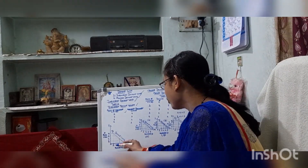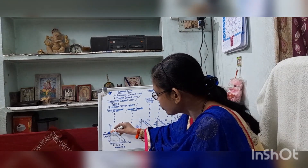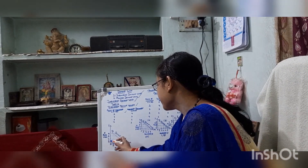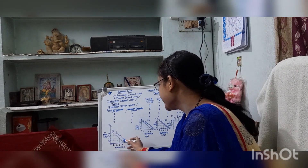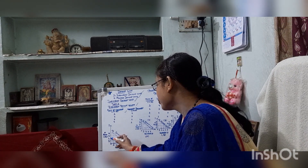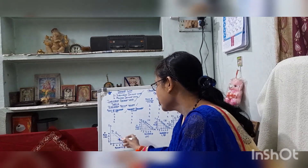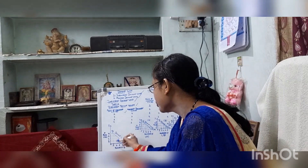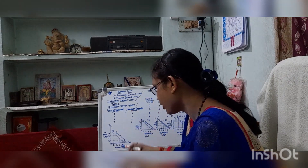On the graph, the OX axis shows the quantity and the OY axis shows the price. When the price of chocolate is 1, quantity demanded is 4. When price is 2, quantity demanded is 3. When price is 3, quantity demanded is 2. When price is 4, quantity demanded is 1.